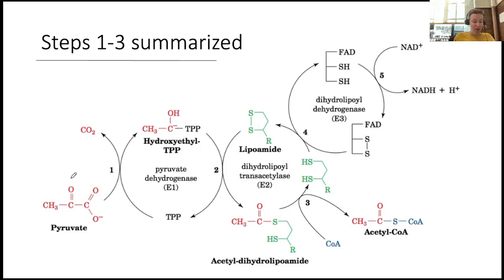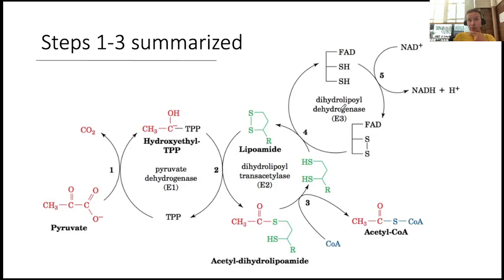To summarize: pyruvate comes into E1, which decarboxylates pyruvate using TPP to stabilize the reactive intermediate, producing the pre-acetyl group. E2 grabs that pre-acetyl group, oxidizes it to the acetyl group, and hands it off to CoA — forming acetyl-CoA from pyruvate. E2 has been reduced, so E3 regenerates E2. E3 itself becomes reduced and uses NAD⁺ to regenerate its own flavin so it can continue as a catalyst. That is the pyruvate dehydrogenase complex. Up next, we'll jump into the citric acid cycle and then end by discussing regulation.